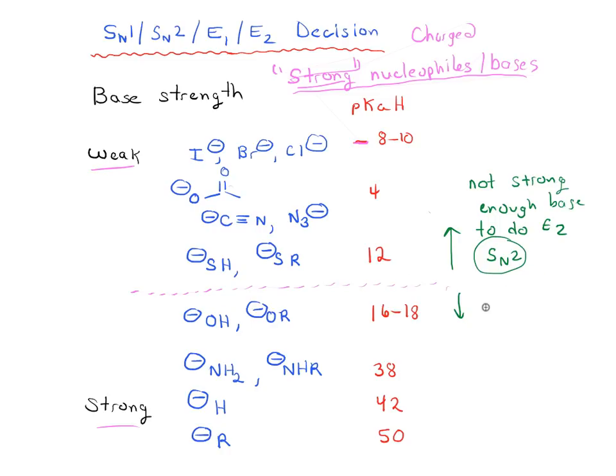And below here, it still doesn't answer our question. It could still, below a pKa of, so stronger than 12, it could still go either way. So we need more information. In other words, we're going to look at the solvent. And the solvent is going to tell us whether or not this reaction is going to go through an SN2 pathway or an E2 pathway.